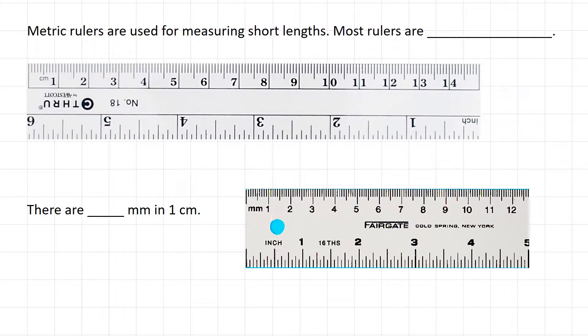Metric rulers are used for measuring shorter lengths. Most rulers are 30 centimeters long—that's like your common ruler that you've probably used at home or in the classroom. On metric rulers, you'll usually see your units written somewhere on the ruler. Here we see on this top ruler the word centimeters written, showing you that this measurement from zero to one is one centimeter.